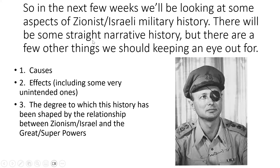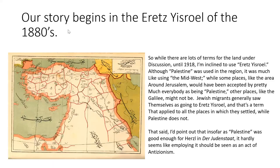Let's go back to Eretz Israel in the 1880s. I use that term self-consciously. 'Palestine' was used in the region — we have maps from the Ottoman Empire that apply the term — but it was not a political term. There was no province of Palestine. The area that would become Mandatory Palestine was divided between about four or five different administrative blocks in the Ottoman Empire. Palestine was used kind of like the way 'the Midwest' is used in the United States.